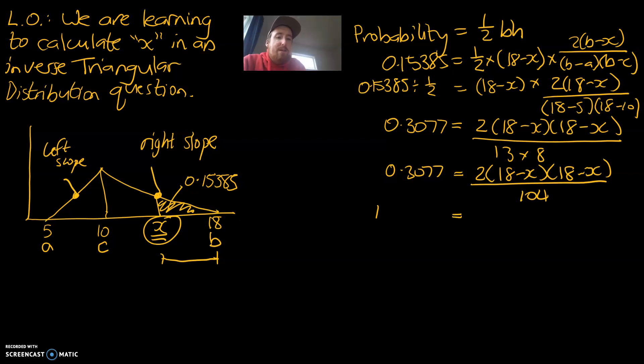We're going to move the divide by 104 and make it a times. And that is going to be equal to 2 times 18 minus x, 18 minus x. We're now going to move this times 2 to make it division. So, we're going to go 104 times 0.3077 divided by 2 is equal to this. Let's expand this bracket here to see what that comes to. x squared minus 36x plus 324.